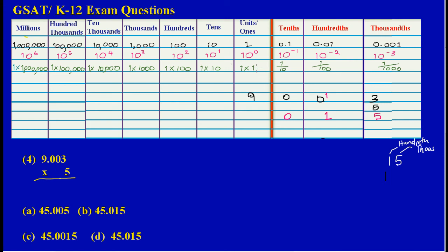Now I'm going to say five times nine — the nine that is in my units column — which gives me forty-five. When I multiply five by the nine in the units column, the digit to the extreme right, which is the five, falls in the units column. I carry the four to my tenths column, because that digit also falls in the tenths column. So five times nine gives me forty-five: I place the five in the units column and carry the four to the tenths column.